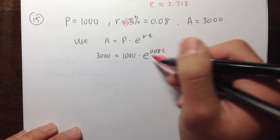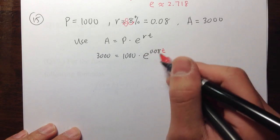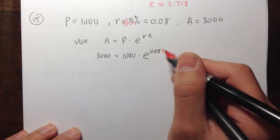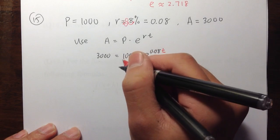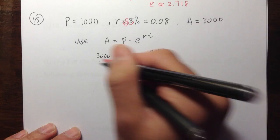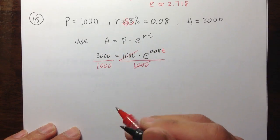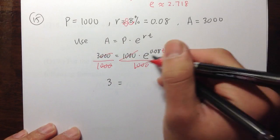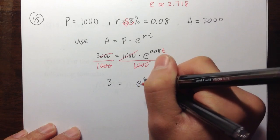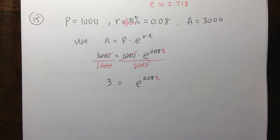To isolate e to the 0.08t, we first divide both sides by one thousand. The one thousands cancel, giving three equals e to the 0.08t. We are still trying to isolate T from the exponent.